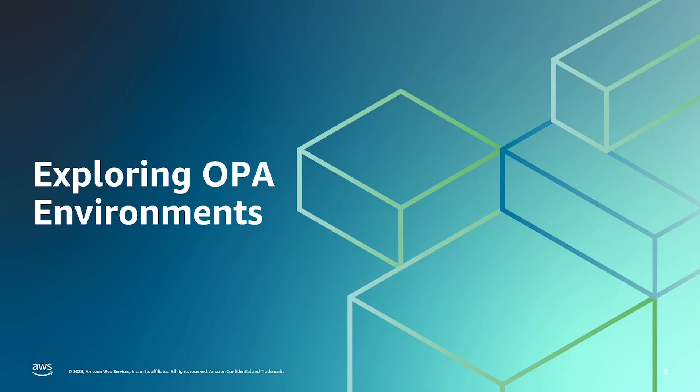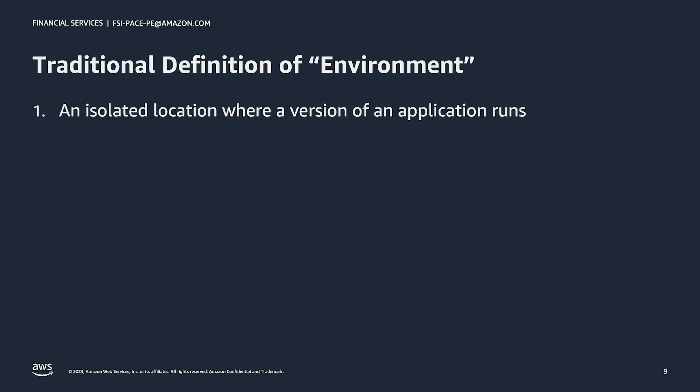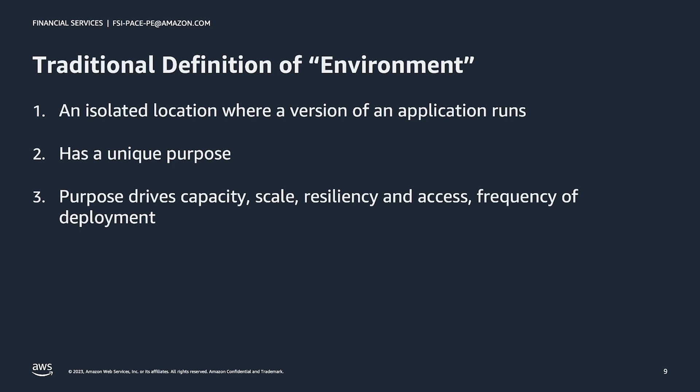Now that we've seen the developer experience for running an app in multiple environments, let's dive deeper into how OPA environments work and how they expand upon the traditional meaning of the term application environment. Traditionally, an application environment is defined as an isolated location where a version of an application runs. These environments are typically created by administrators and each environment serves a unique purpose. The purpose of the environment determines its configurations — such as how much capacity it has, how it scales, how resilient it needs to be, who has access, and how often applications get deployed to it.